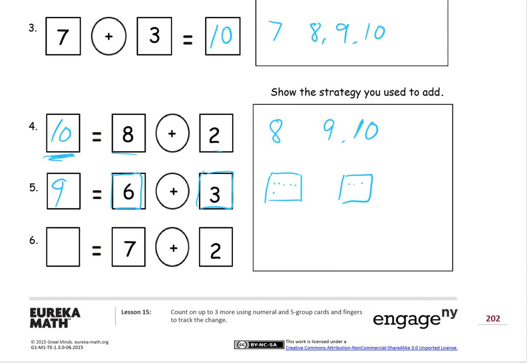So seven plus two. That's seven. Start with seven. And I need two more numbers. Eight, nine. Two more fingers. Gets you to nine. Seven plus two. Nine equals seven plus two.